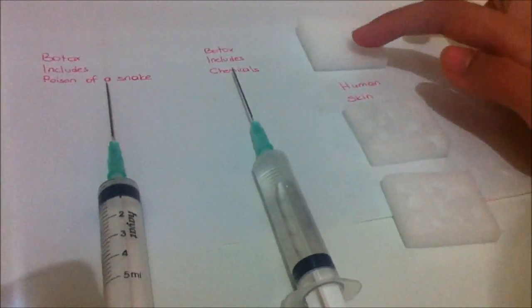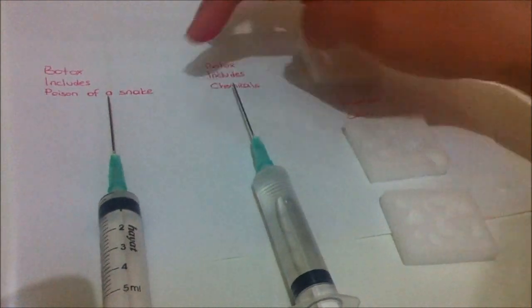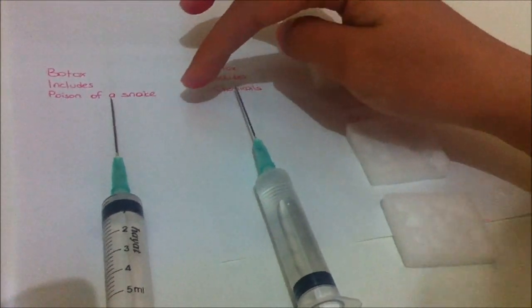This represents human skin. This is botox that includes chemicals, and this is botox that includes poison of a snake.